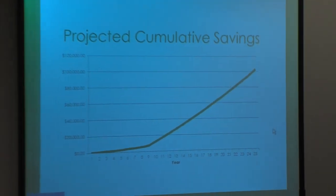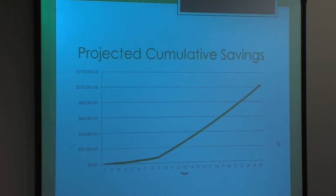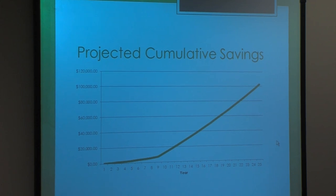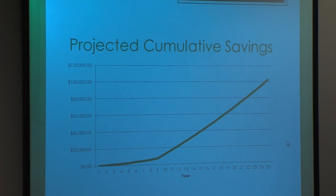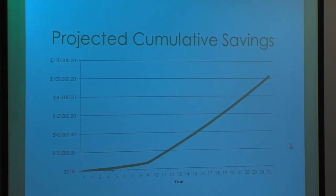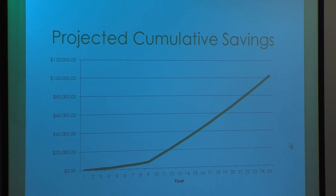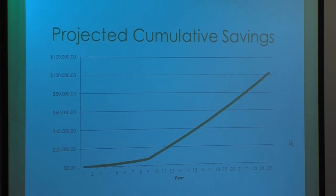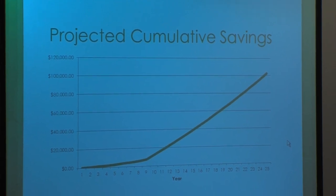This is a graph of the projected cumulative savings. According to the Department of Energy and OEP historical data, there is a 3% increase on energy costs, and this could increase even more, which means GBCC would save even more. GBCC has the potential to save over $100,000 over the life of the panels, based at one cent per kilowatt. This could help keep tuition costs down over the lifetime of the panels.